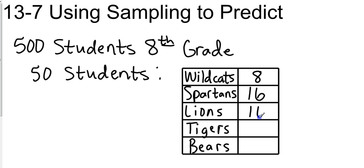Then 10 wanted to be Lions, 9 wanted to be Tigers, and 7 wanted to be Bears. That's a sampling that somebody could use to predict — we use this in the survey method as well. They would look at that and say okay, Spartans is going to be the most. Now what percentage would that be?